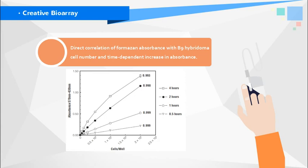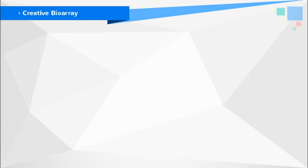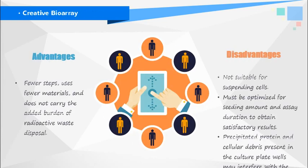MTT assays can be used to measure cytotoxicity, loss of viable cells, or cytostatic activity — including the shift from proliferation to quiescence — of potential medicinal agents and toxic materials. MTT has fewer steps and does not carry the added burden of radioactive waste disposal. However, it is not suitable for suspension cells, must be optimized for seeding amount and assay duration, and precipitated protein and cellular debris in culture plate wells may interfere with optical readings.